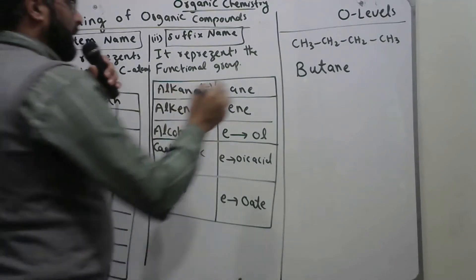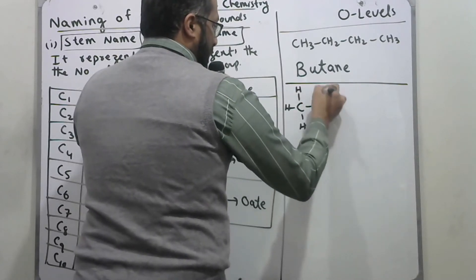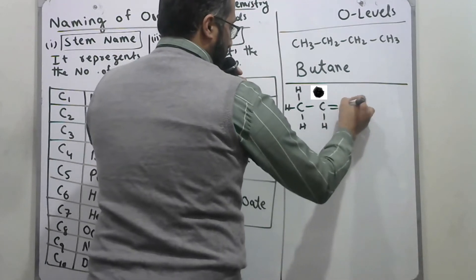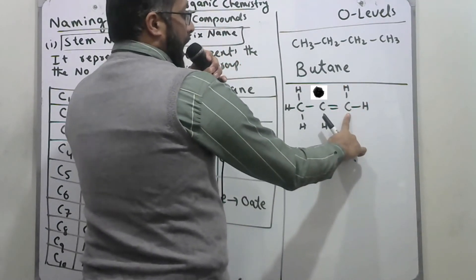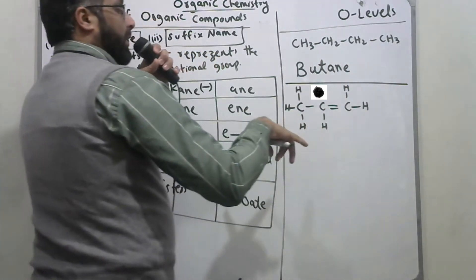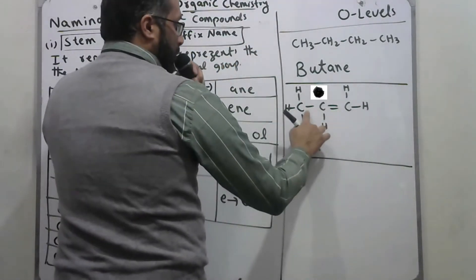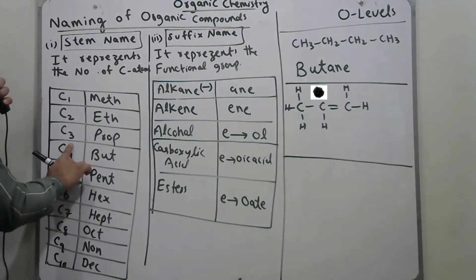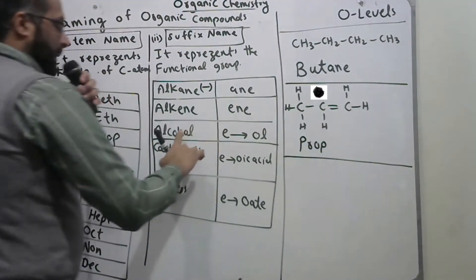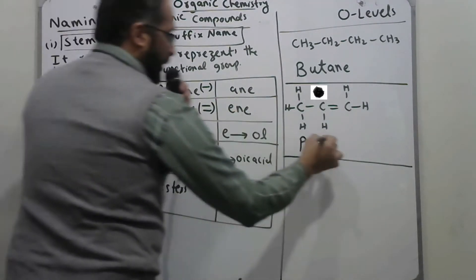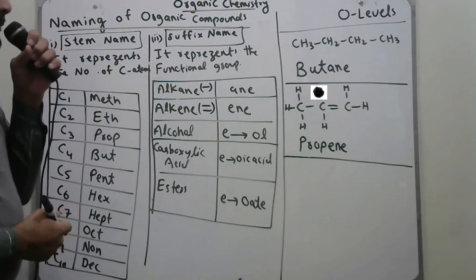Now for the compound CH2=CH-CH3 with a double bond — every carbon has 4 covalent bonds, so complete them accordingly. To write the name, first count the carbon atoms: 1, 2, 3 — there are three carbons, so we write 'prop' as the stem name. For a double bond, the suffix is 'ene', so the name is 'propene'.